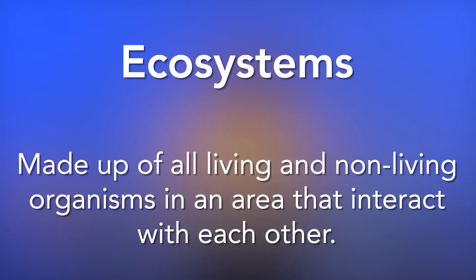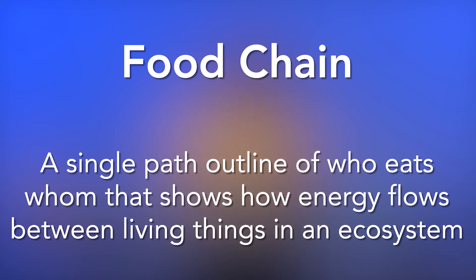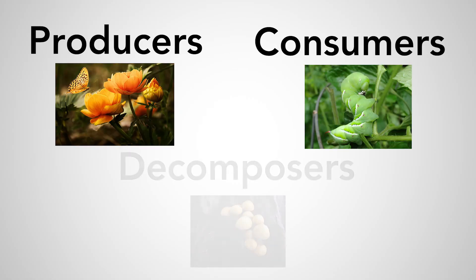STEAM scholars, I hope you enjoyed learning about ecosystems. Today we learned that ecosystems are made up of all living and nonliving organisms in an area that interact or connect with each other. We also learned that a food chain is a single path outline of who eats whom that shows how energy — the ability to do work — flows between living things in an ecosystem. Energy in a food chain starts with the sun and it has three categories: producer, consumer, and decomposer.